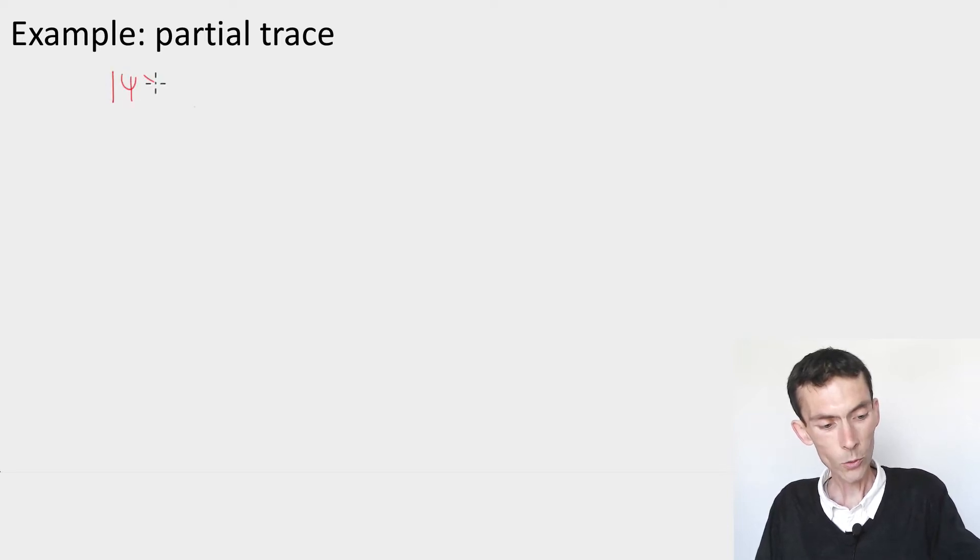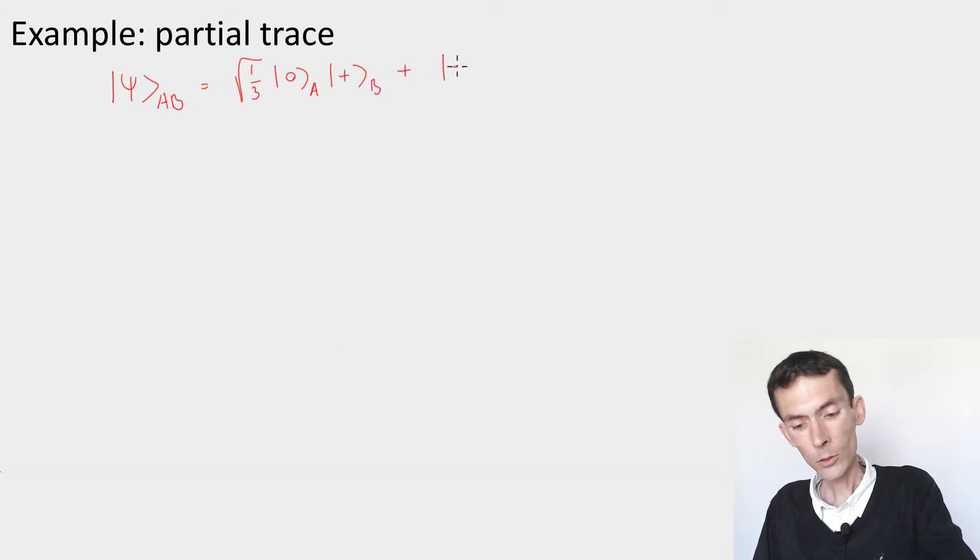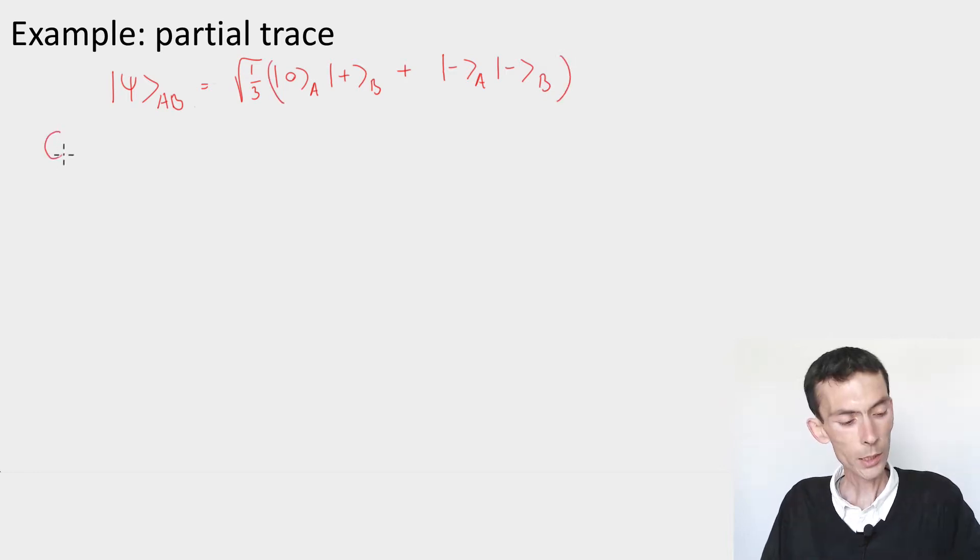So the example that I want to show you is a two-qubit state, psi AB, which is defined as root one-third times zero on A, plus on B, plus root two-thirds minus on A, minus on B. That's our state. And the goal is to compute the reduced density rho A on A.